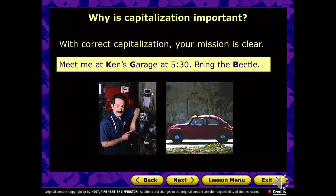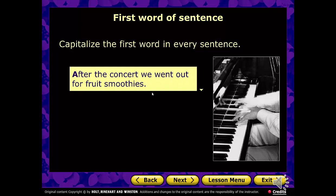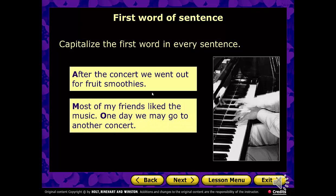We're going to go through the rules real quickly. The first one is one you most likely learned first in lower school: capitalize the first word in every sentence. For example, 'After the concert, we went out for fruit smoothies' — capital A. 'Most of my friends like the music' — capital M. 'One day we may go to another concert' — capital O.